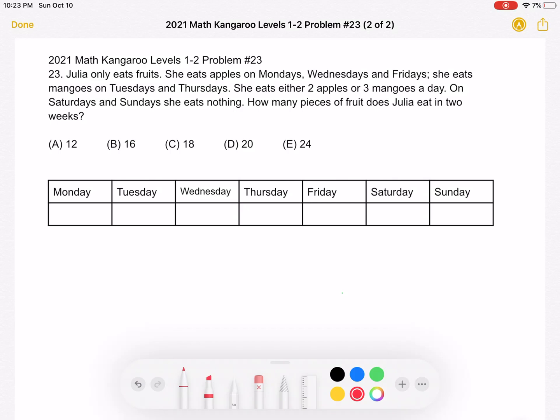So let's start with the fact that she eats apples on Mondays, Wednesdays, and Fridays. So let's circle those days in red to signify that she eats apples on those days. And we know that she eats mangoes on Tuesdays and Thursdays, so we'll circle those days in yellow to mean that she eats mangoes.